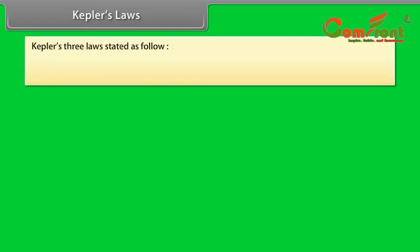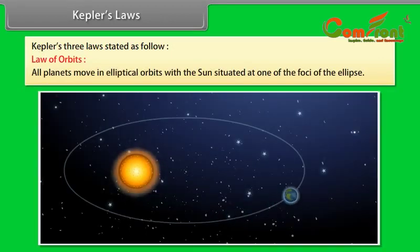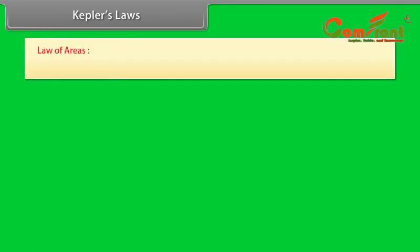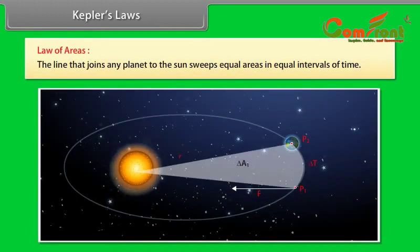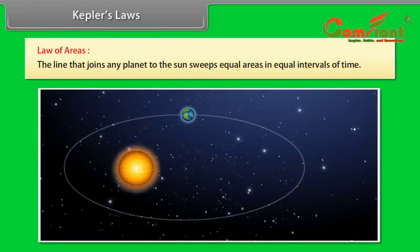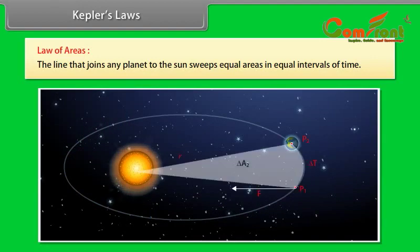Kepler's law. Kepler gives three laws. They are stated as: Law of orbits - All planets move in elliptical orbits with the sun situated at one of the foci of the ellipse. Law of areas - The line that joins any planet to the sun sweeps equal areas in equal interval of time. This law comes from the observation that planets appear to move slower when they are farther from the sun than when they are nearer.